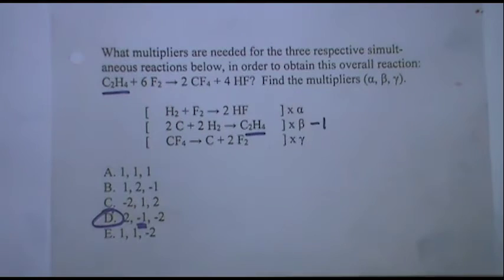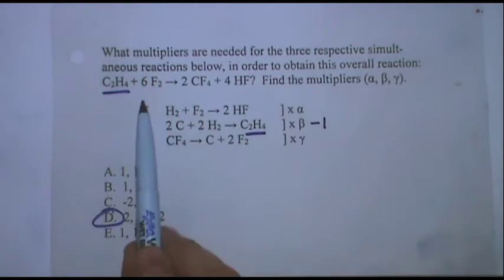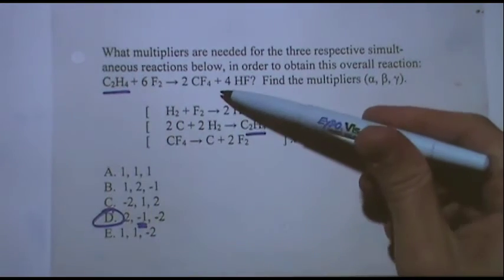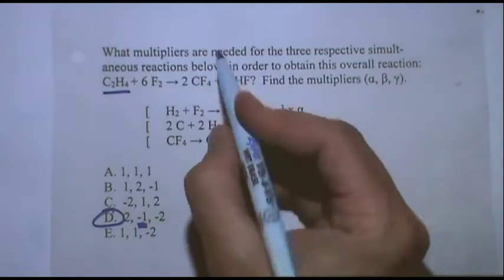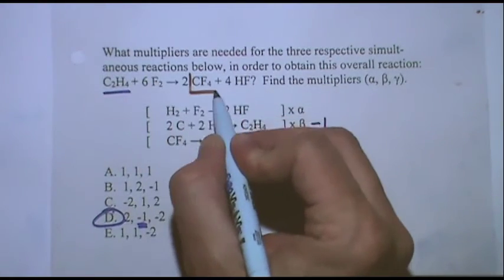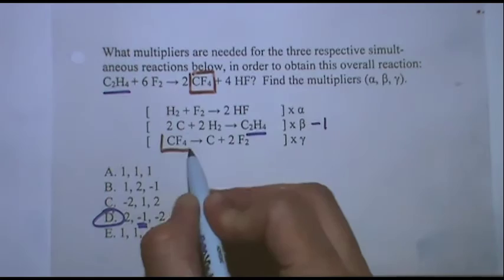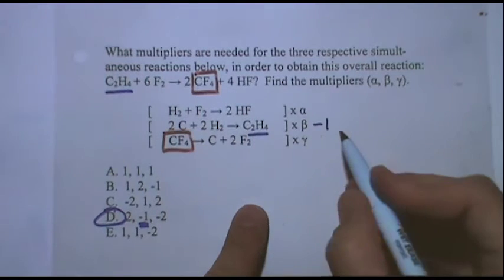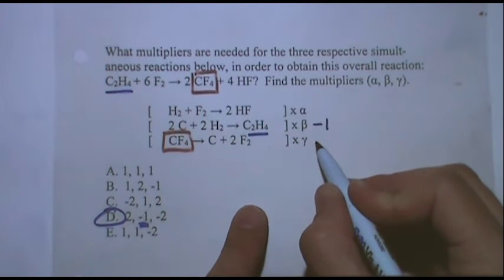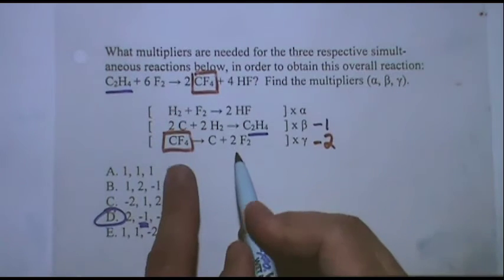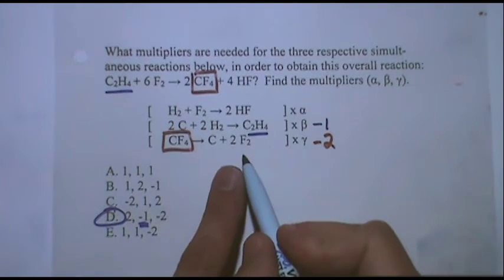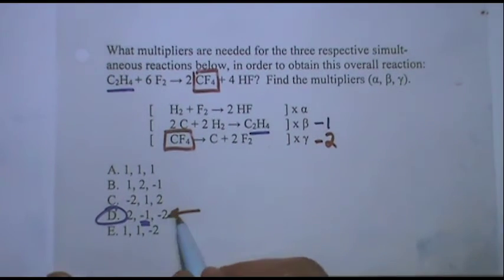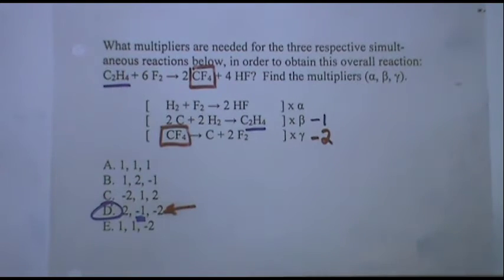But maybe you don't trust yourself. So I'll pretend you don't. So now let's get brown. Is F a good one to pick? No, it appears too many times. One, two, three. How about CF4? That's a good one. So I'll put a brown square. Again, I need this to match the overall. So gamma must be negative two. I need negative flips it to put this in the products. And the two gives it the two coefficient. Which again, notice it's matching nicely.